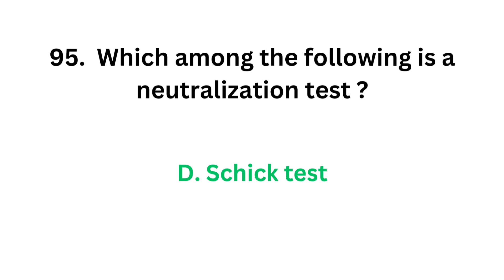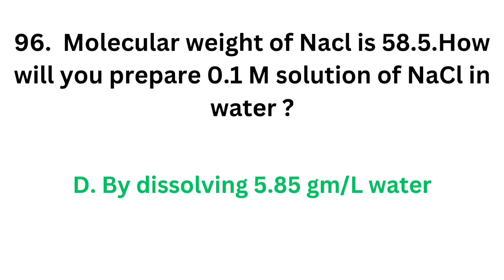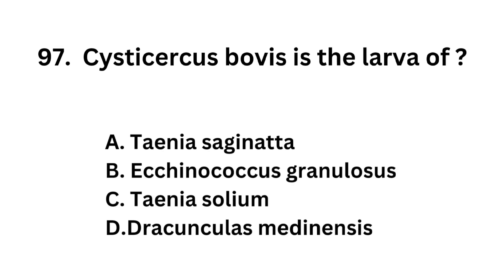Question number 96. The molecular weight of sodium chloride is 58.5. How will you prepare a 0.1 molar solution of sodium chloride in water? Option A. By dissolving 5.85 mg per liter water. Option B. By dissolving 5.85 mg per 100 ml water. Option C. By dissolving 58.5 mg per liter water. Option D. By dissolving 5.85 g per liter water. The correct answer is option D: by dissolving 5.85 g per liter water, we can prepare a 0.1 molar solution of sodium chloride. If you want to know about the calculation, please comment.